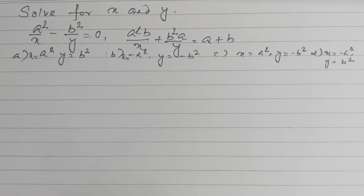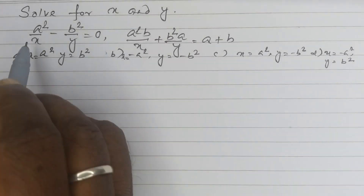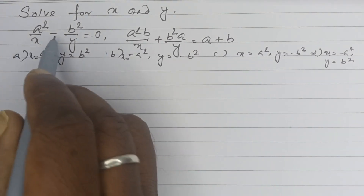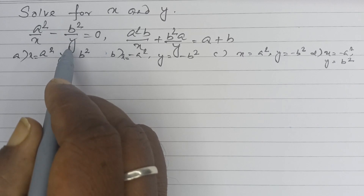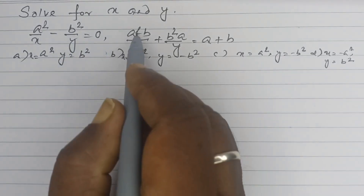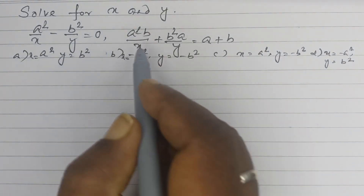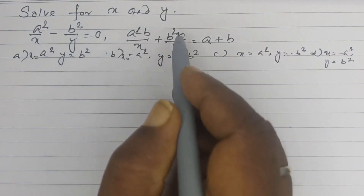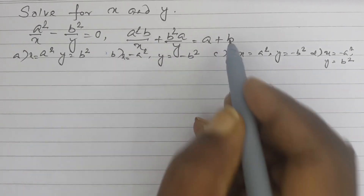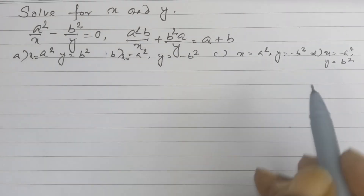Solve for x and y. The first equation is a squared by x minus b squared by y is equal to 0, and the second equation is a squared b by x plus b squared a by y is equal to a plus b.